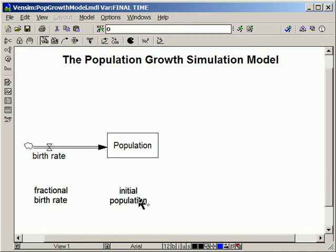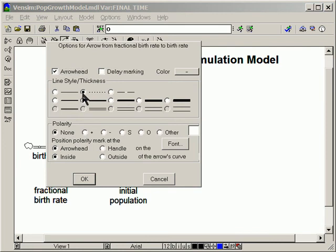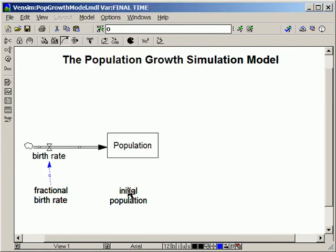Now let's add our arrows. This fractional birth rate affects that. Because it's a constant, we're going to use a standard of dotted lines. The initial population is, of course, the initial population of our stock. And the population influences the birth rate. So we add this. Now that is the feedback loop.